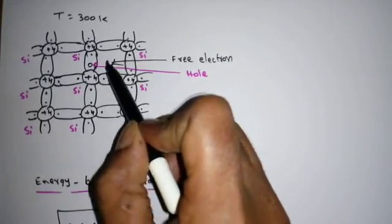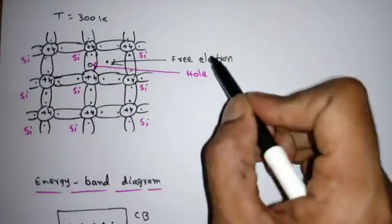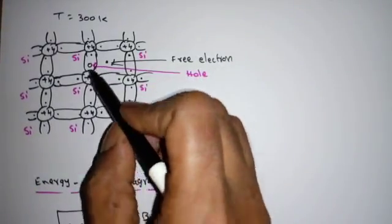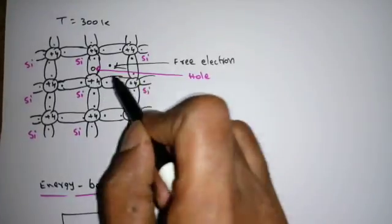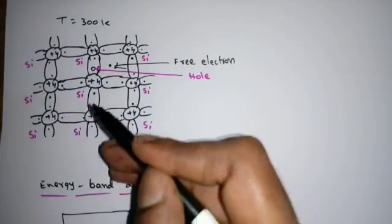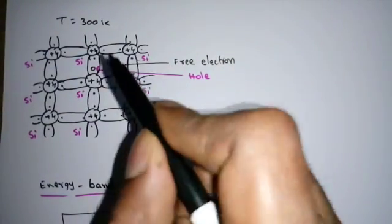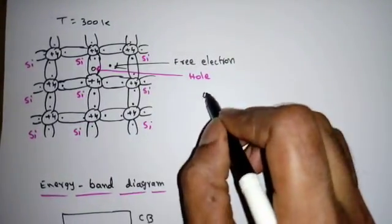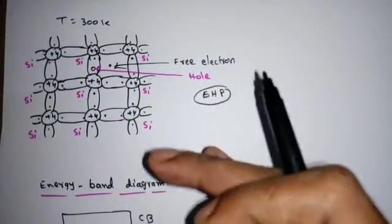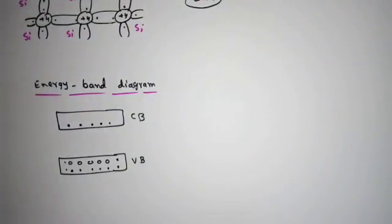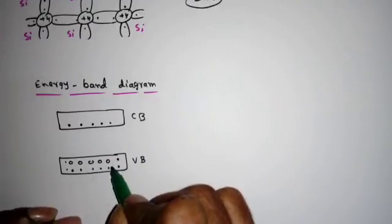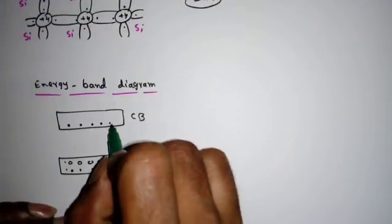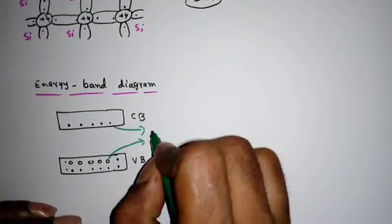Whenever a covalent bond breaks, the electron goes to the free space — it becomes a free electron — and it leaves behind an empty state called a hole. For every covalent bond breaking, there is one free electron and one hole. By raising the temperature and giving thermal energy, we are generating electron-hole pairs. This is the energy band diagram of the intrinsic semiconductor at 300 Kelvin — for every covalent bond breaking there is an electron-hole pair.